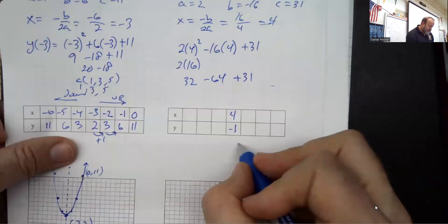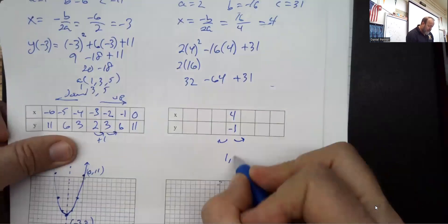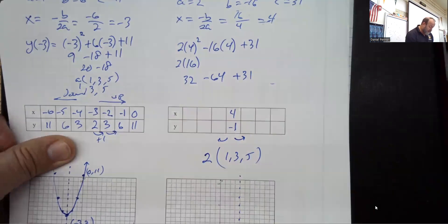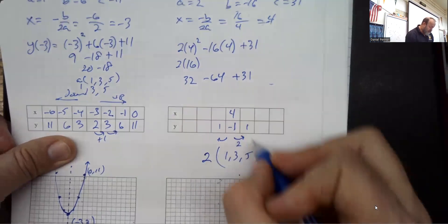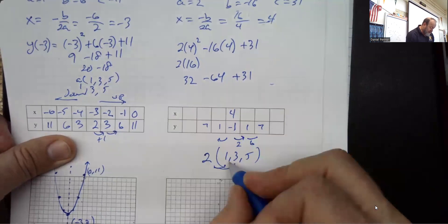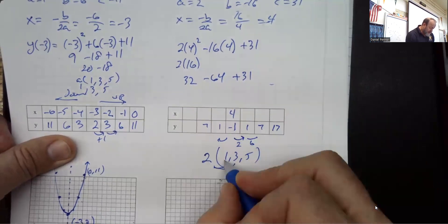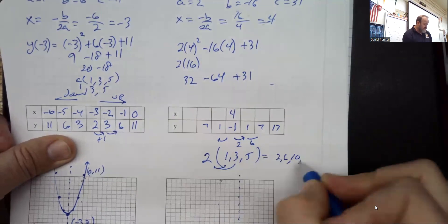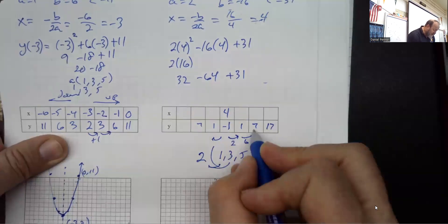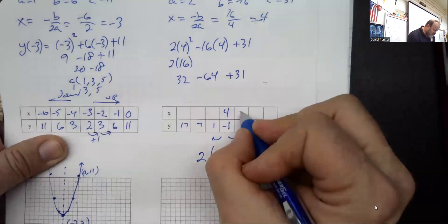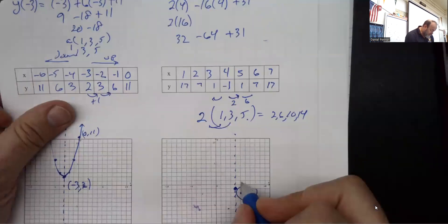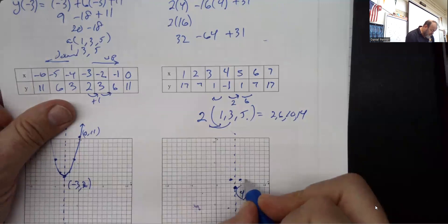Now I use the 1-3-5 pattern multiplied by a, which is 2. So I go up 2, then up 6, then up 10. Starting from the vertex at negative 1: up 2 hits 1, up 6 hits 7, up 10 would hit 17. The values going up are 2, 6, 10, 14 as I move away from the vertex. Going up 2 and then up 6 — that puts a point right up at 7.